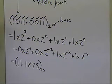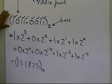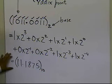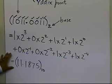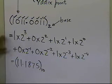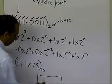So what I've shown in this segment is how to convert a base 2 number to its base 10 equivalent. In the next segment, I'll show you the reverse process — given a number in decimal or base 10, how do you convert it into a binary number. And that's the end of this segment.